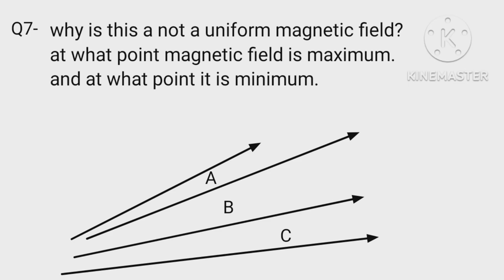Why is this not a uniform magnetic field? At what point is magnetic field max? Non-equal spacing means non-uniform magnetic field. Spacing between the magnetic lines corresponds to magnetic strength, that is, narrower are the lines, larger is strength and vice versa. Magnetic strength is maximum at A and minimum at B.